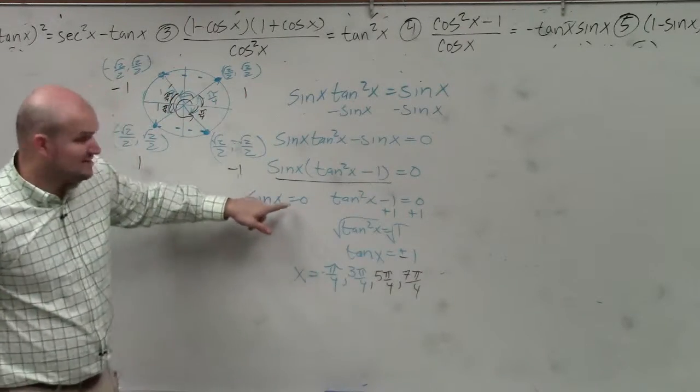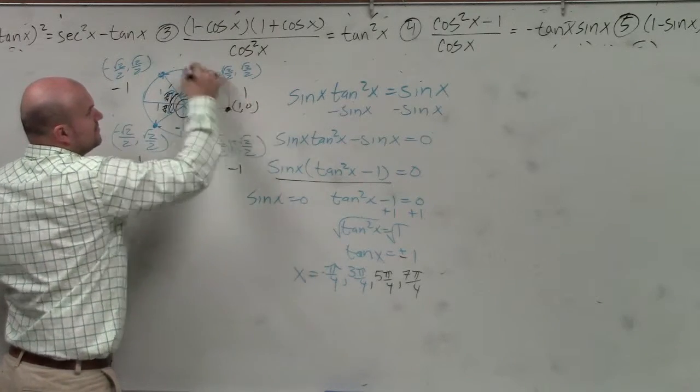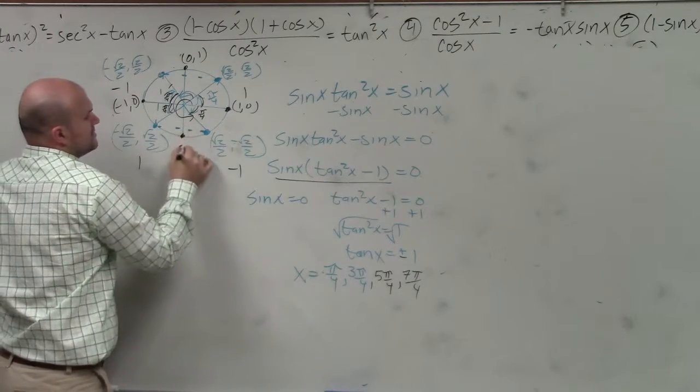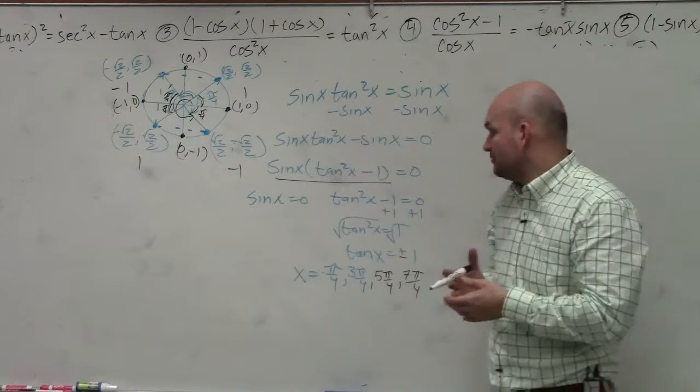Then we still have to do sine of x equals 0. So remember, here is 1 comma 0, 0 comma 1, negative 1 comma 0, 0 comma negative 1. Sine represents the y-coordinate. When is the y-coordinate equal to 0?